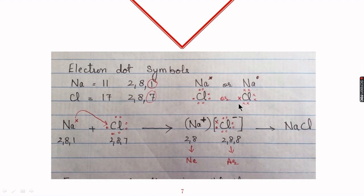For the formation of a bond between sodium and chlorine: sodium wants to lose one electron to become stable, while chlorine wants to gain one electron to become stable. So sodium loses its one electron to chlorine, and in the process both become stable. Sodium achieves the configuration 2, 8 — that of the inert gas neon.